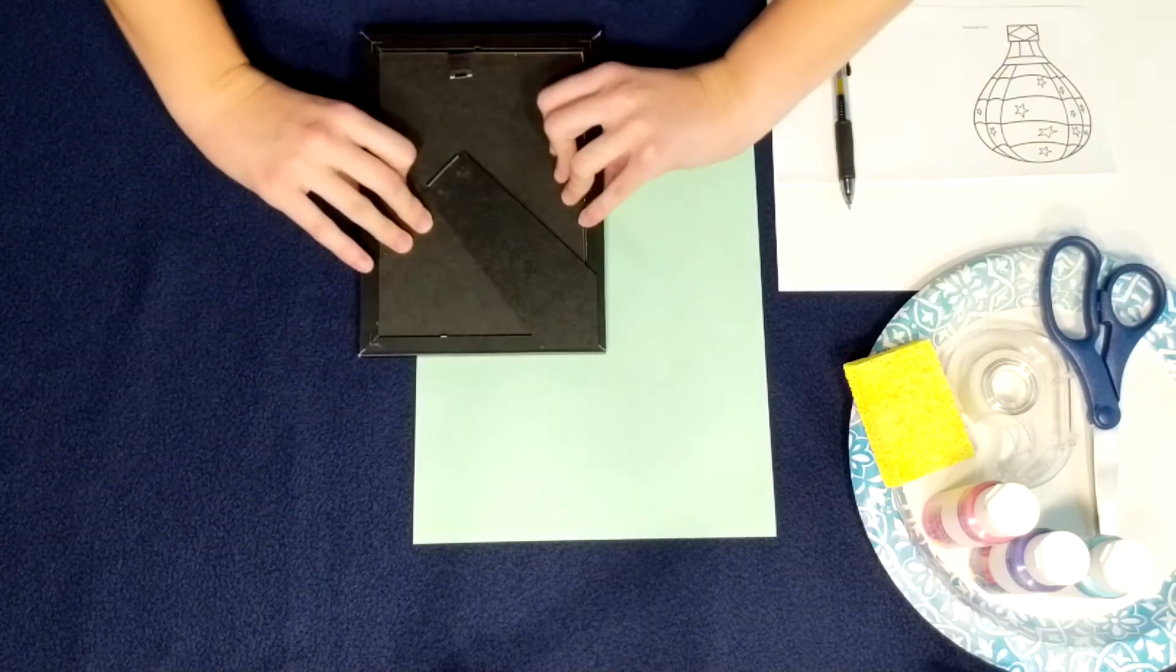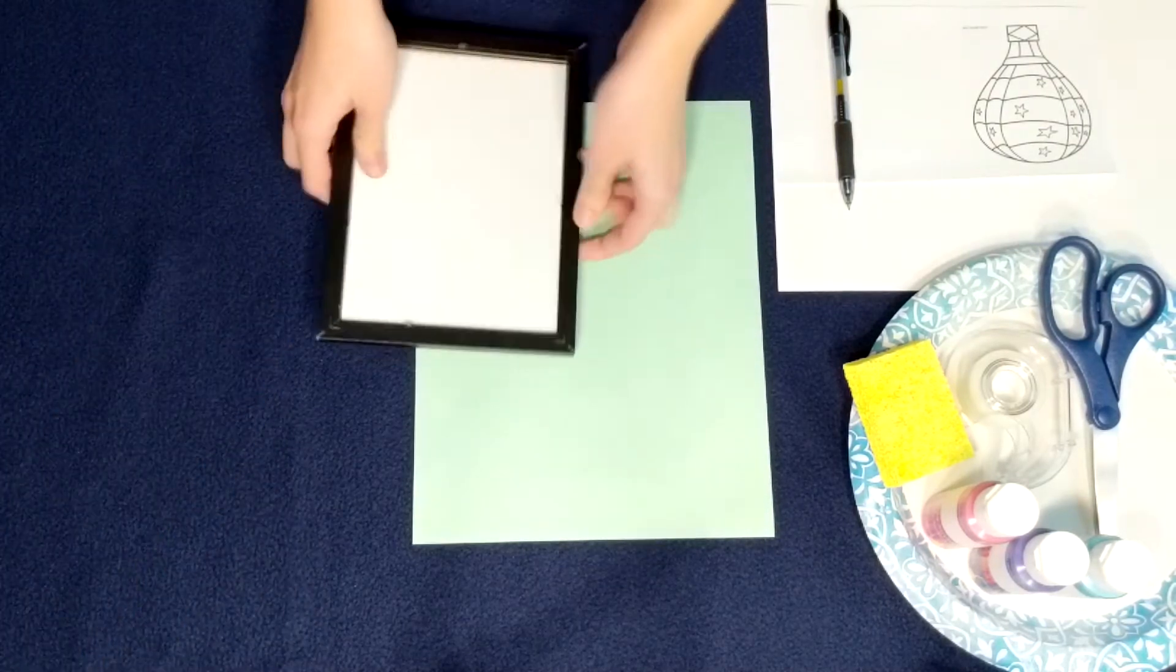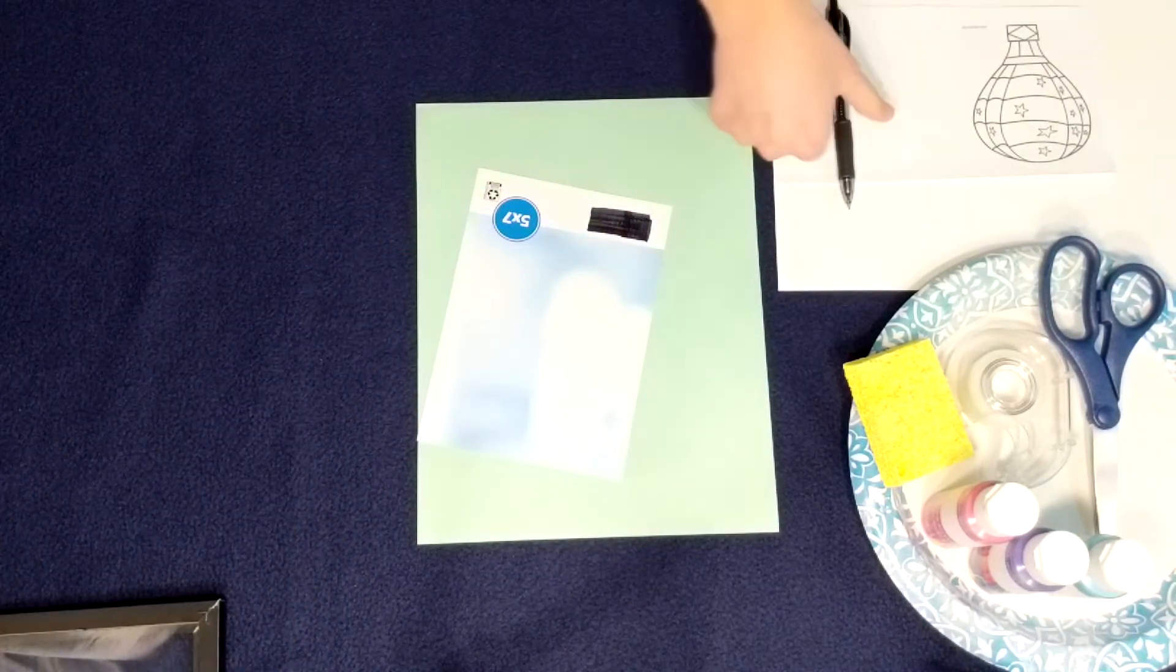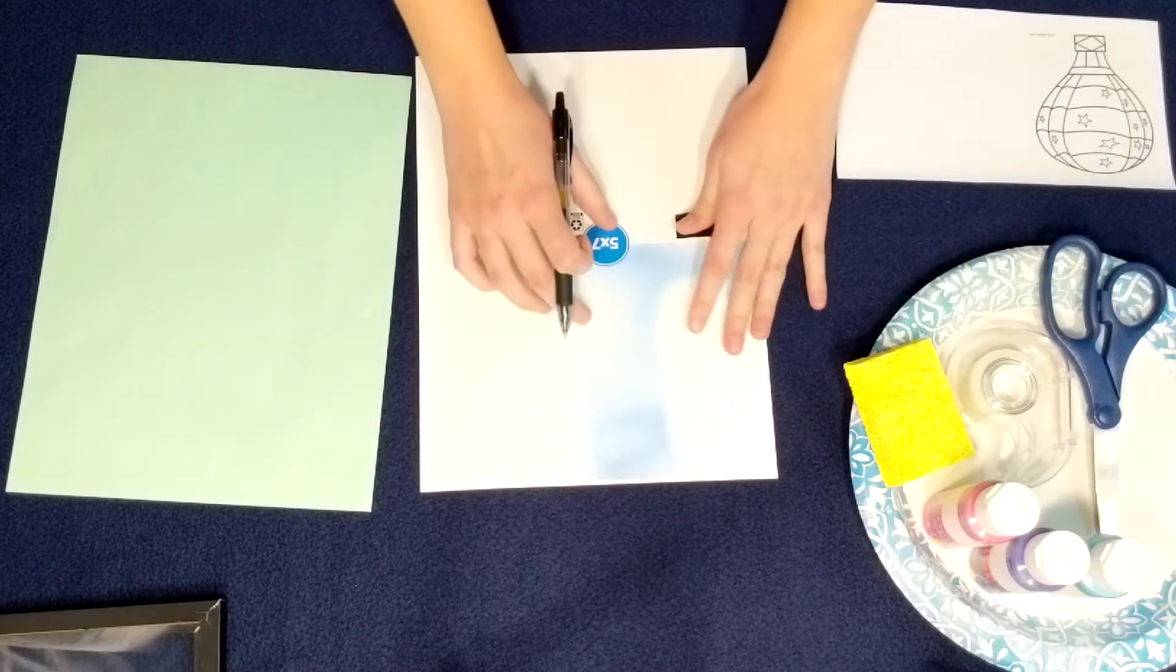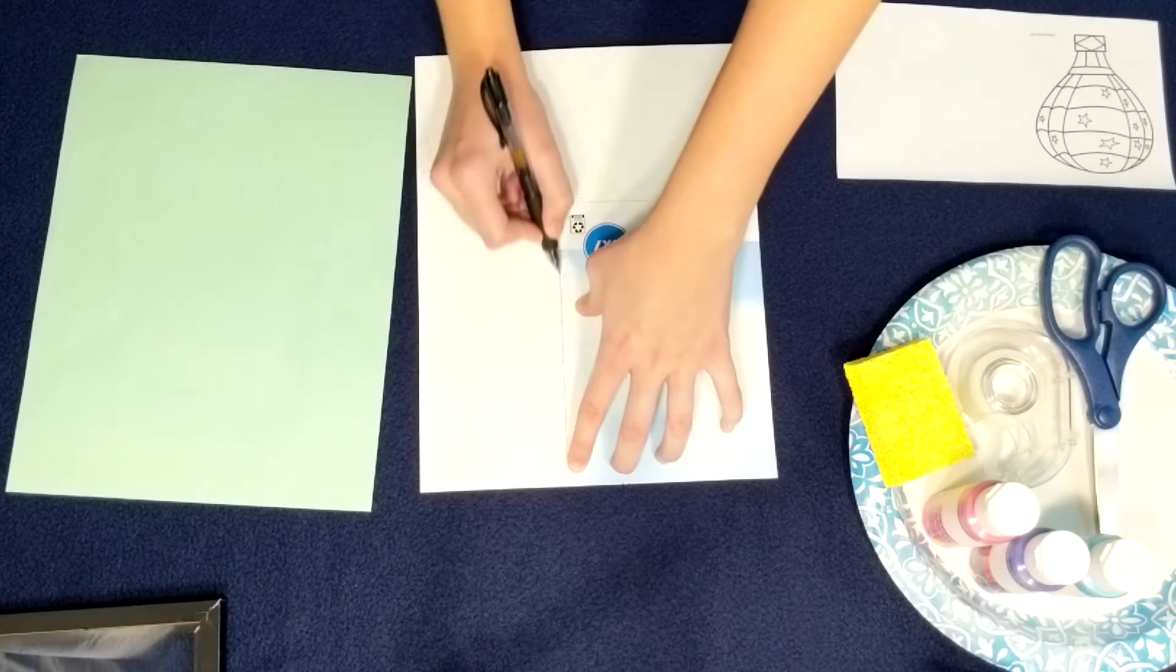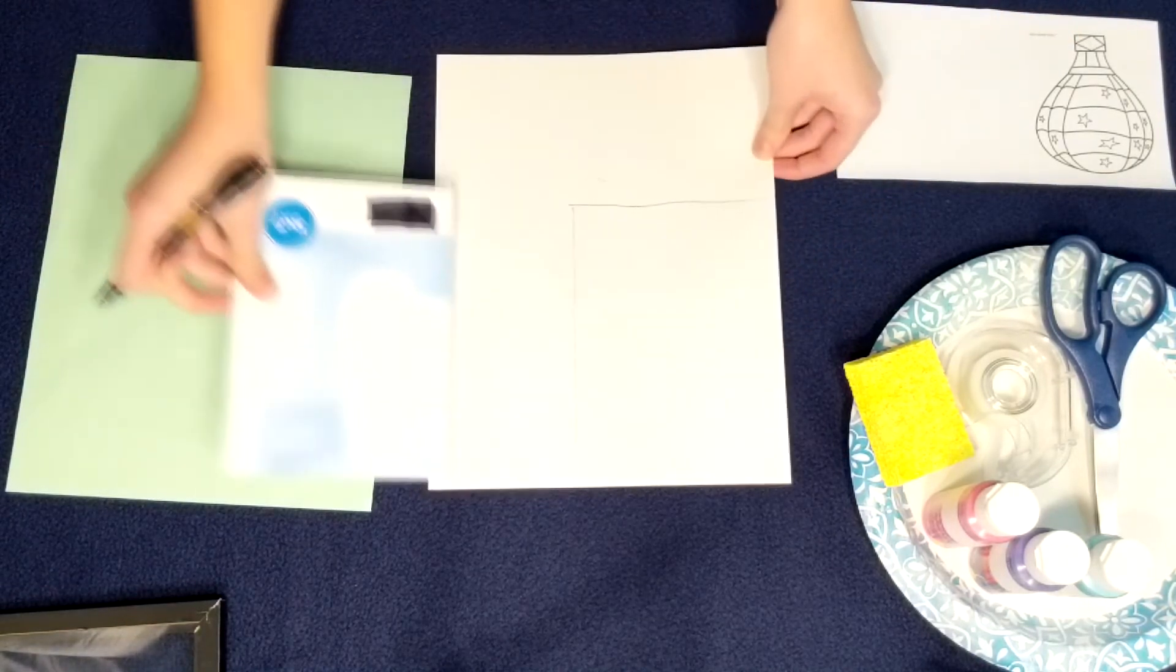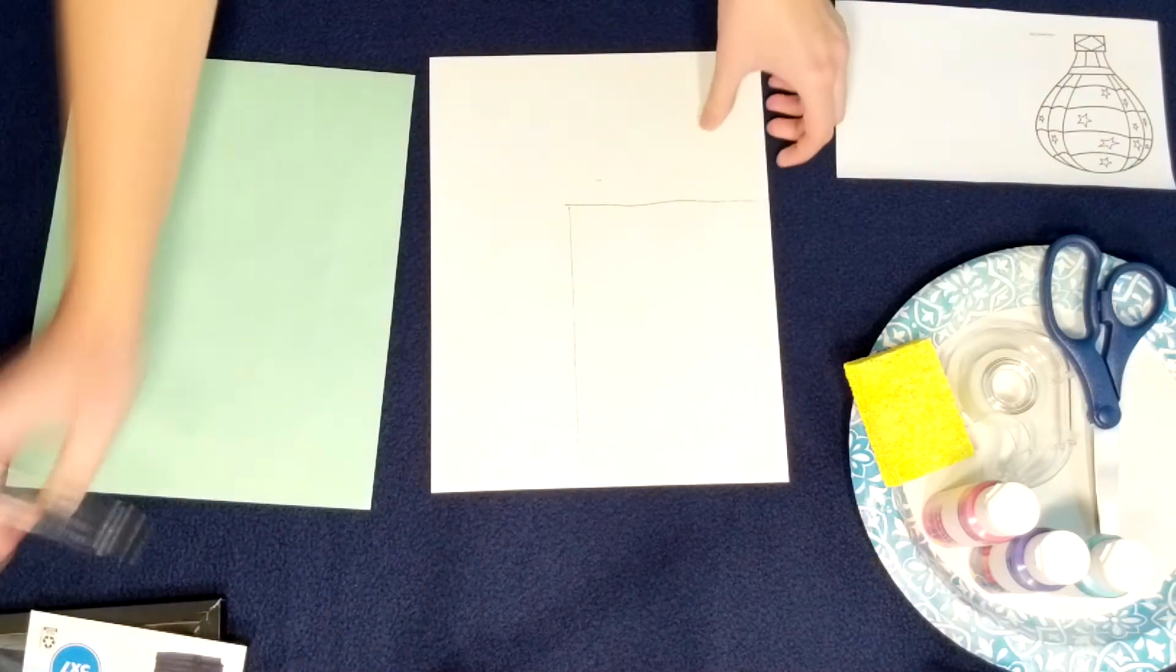To start, I'm going to take the picture, take off the back, put that aside, and then I'm going to take out this picture or the paper, and I'll put the frame aside. Then taking my cardstock paper, I am going to line it up to the edge and trace it because this will be the piece of paper that you will be painting on. It doesn't have to be neat because it'll be hidden by the frame.